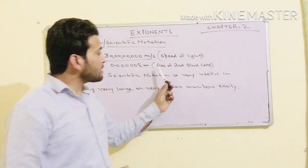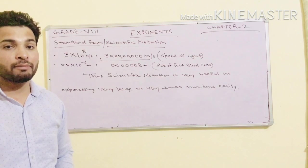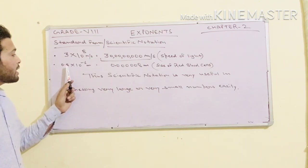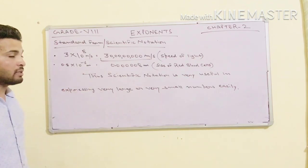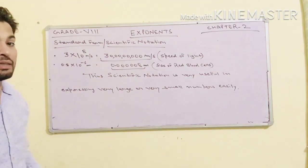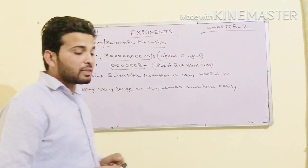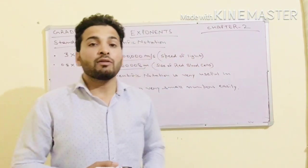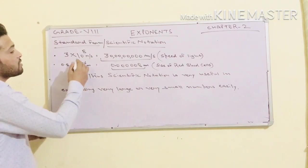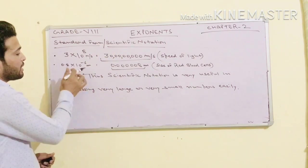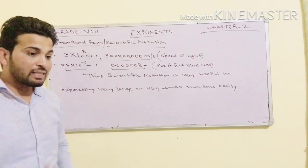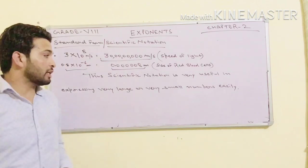One more question: what is the size of red blood cells in the human body? That is 0.8 × 10⁻⁶ meters, which we could also write as 0.00000008 meters. So why am I asking these questions? Because the speed of light is very large, and the size of red blood cells is very small — and this is exactly where we use scientific notation.